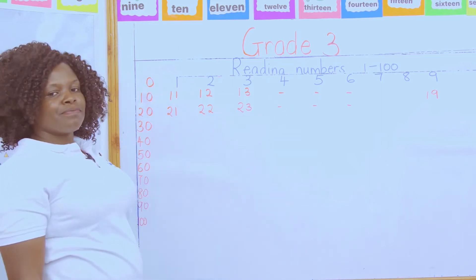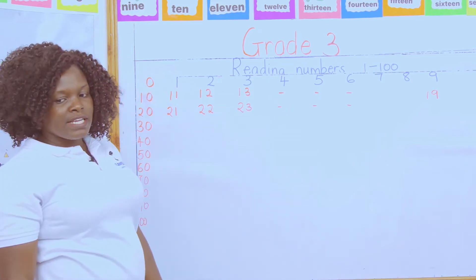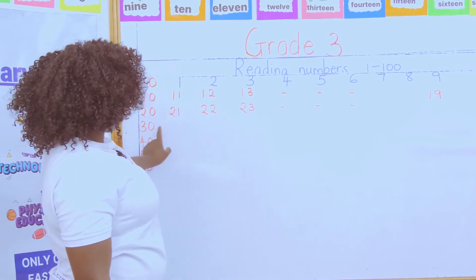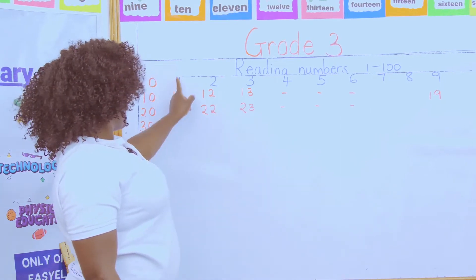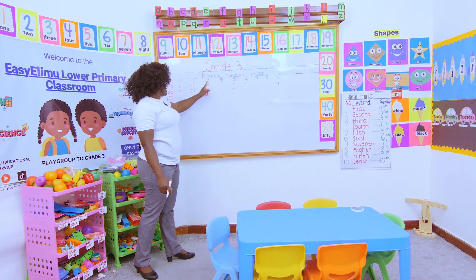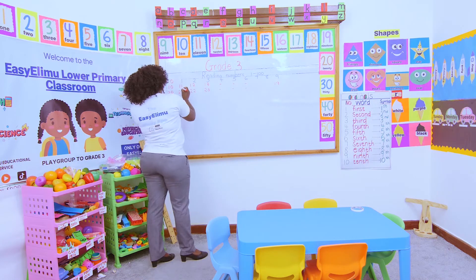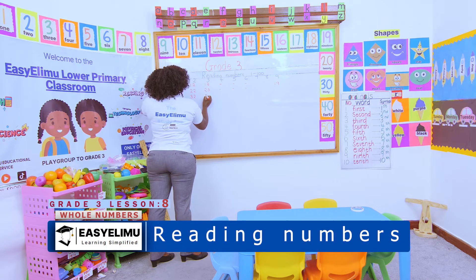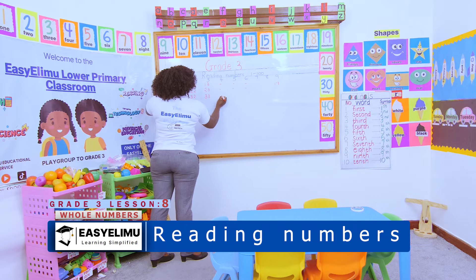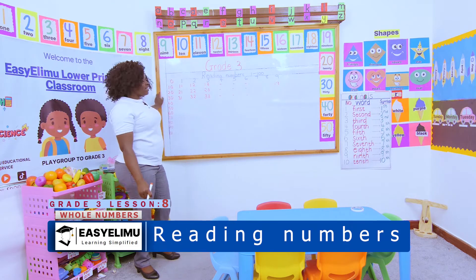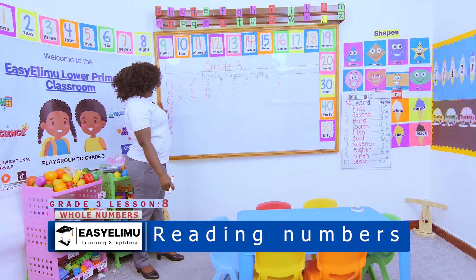We come again to 30 — the last number before it is 29. All the numbers in this line will be 30 plus the main number. So 30 plus 1 gives 31, 30 plus 2 gives 32, 30 plus 3 gives 33. Continue like that and fill in the missing numbers.